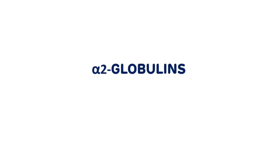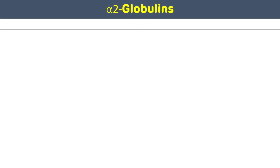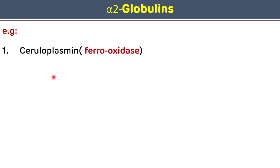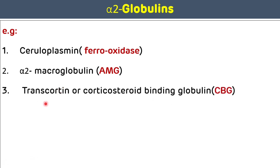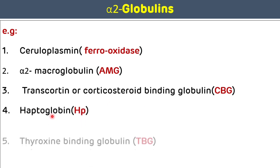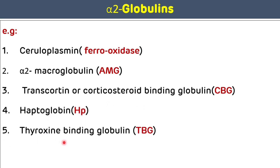Now we will discuss alpha 2 globulins. The examples of alpha 2 globulin are: ceruloplasmin, alpha 2 macroglobulin, transcortin (corticosteroid binding globulin), haptoglobin, and thyroxine binding globulin.